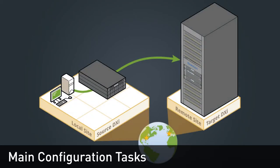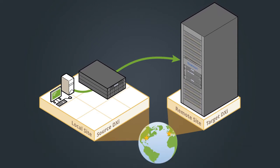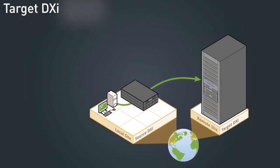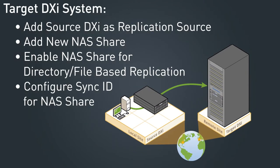When configuring file cartridge replication, there are specific tasks that need to be completed on the source DXi and the target DXi. On the target DXi, I need to add the source DXi as a replication source, add a NAS share, enable directory file-based replication for the share, and configure a sync ID for the share.